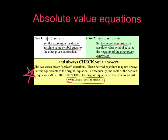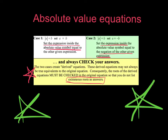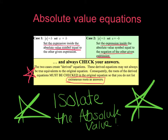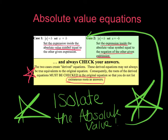The other big idea — put a big star next to this — before we do any of this, we need to isolate the absolute value. Isolate means get it by itself, get it alone. We need the absolute value alone, and then we go ahead and do these two cases. So let's go ahead and dive into a few quick examples.